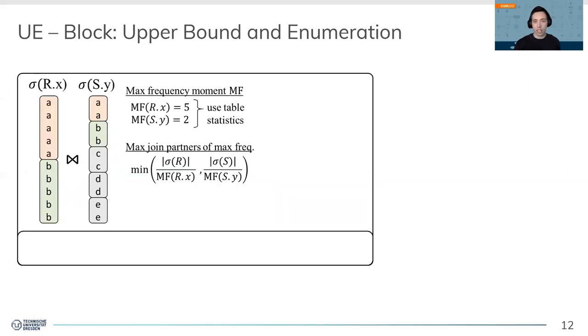Every value finds a join partner. In the end, this gives us a multiplicity per value of 10, as we have 10 A's in the result and 10 B's in the result. This really is an upper bound.